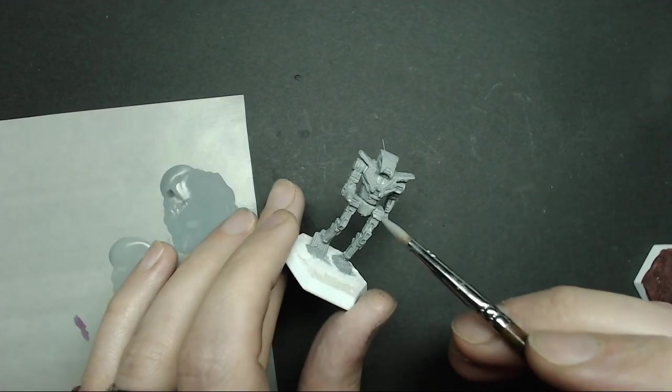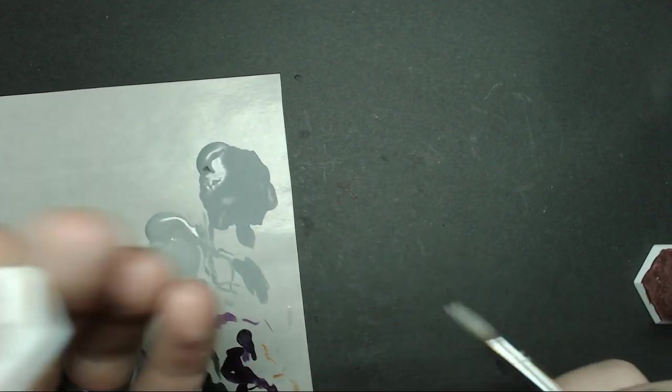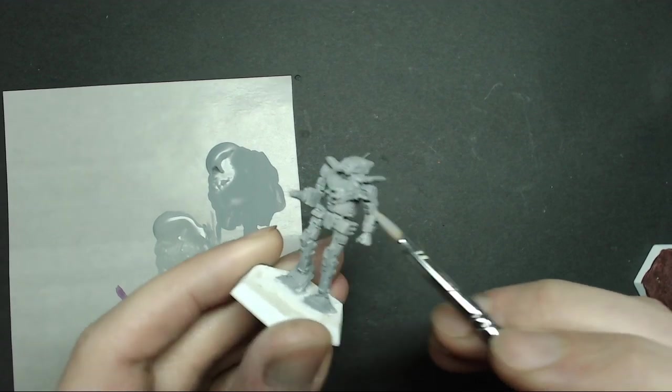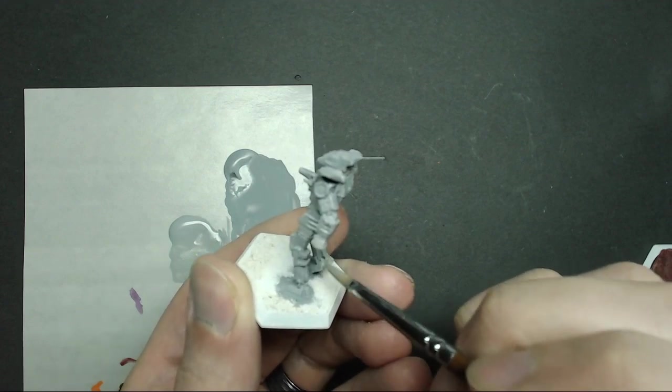Once I've let that first coat completely dry, I'm going to come back and touch up any areas I may have missed. And then I'm going to apply an overall thin coat over the entire miniature just to make everything smooth and a nice base for our colored transparent paint that we're going to put over the top of this.